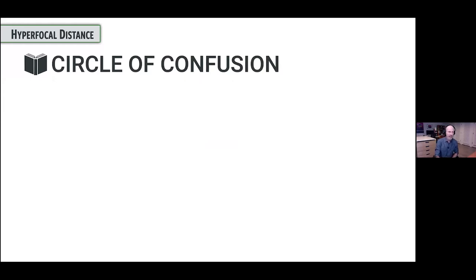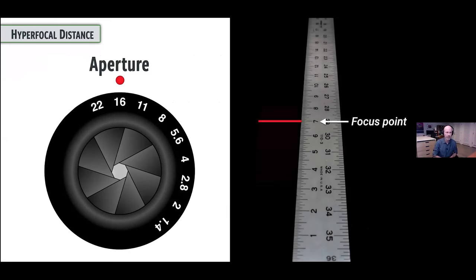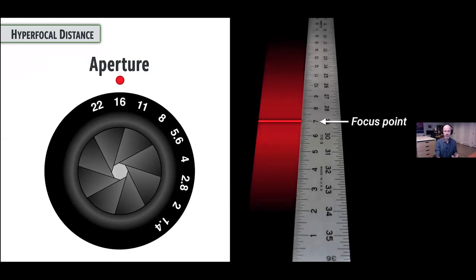So let's talk about the circle of confusion. What is it? It's the maximum size of a projected point of light considered to be in focus. Think about a tiny spot of light that you photograph — it comes through your lens and gets projected onto your sensor. How big can that be, or how small does it need to be to be considered in focus? When we set a particular aperture, where we focused is very sharp and then it kind of tapers off and gets less sharp until at a certain point it's unacceptable and out of focus.